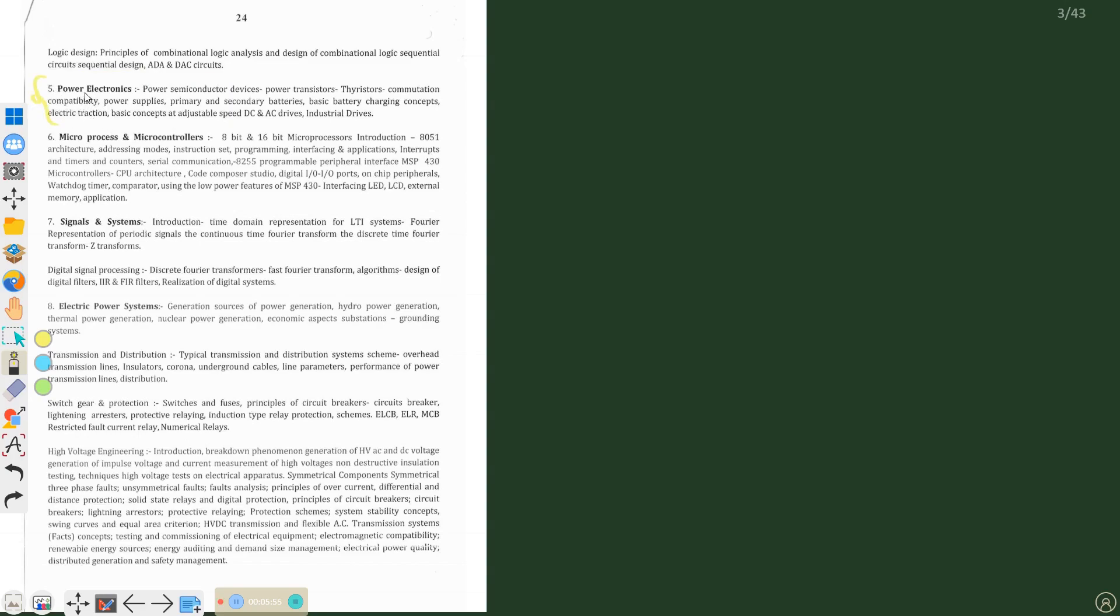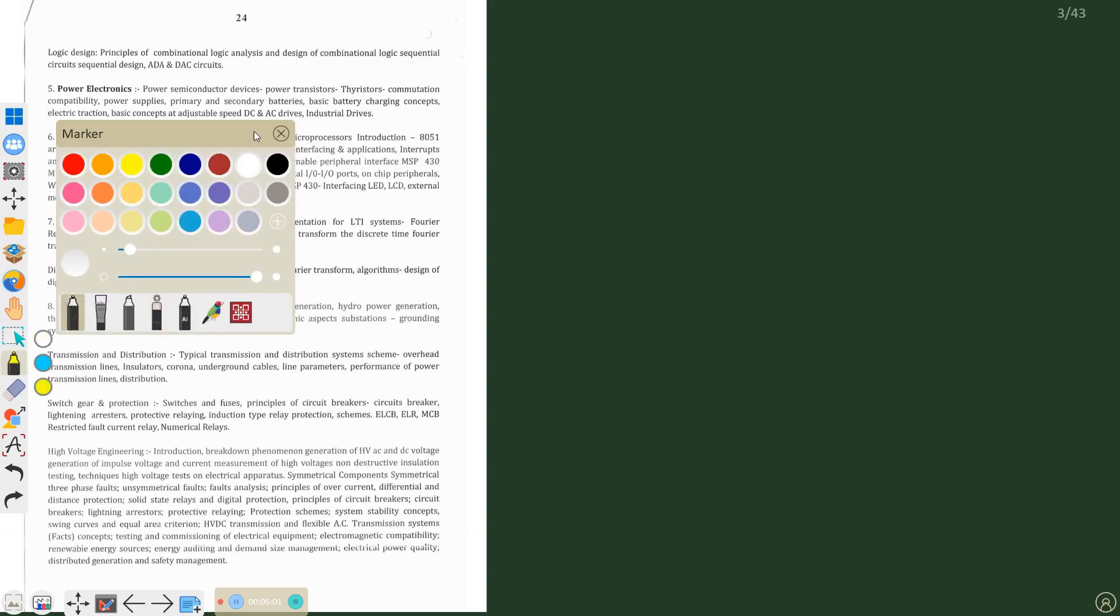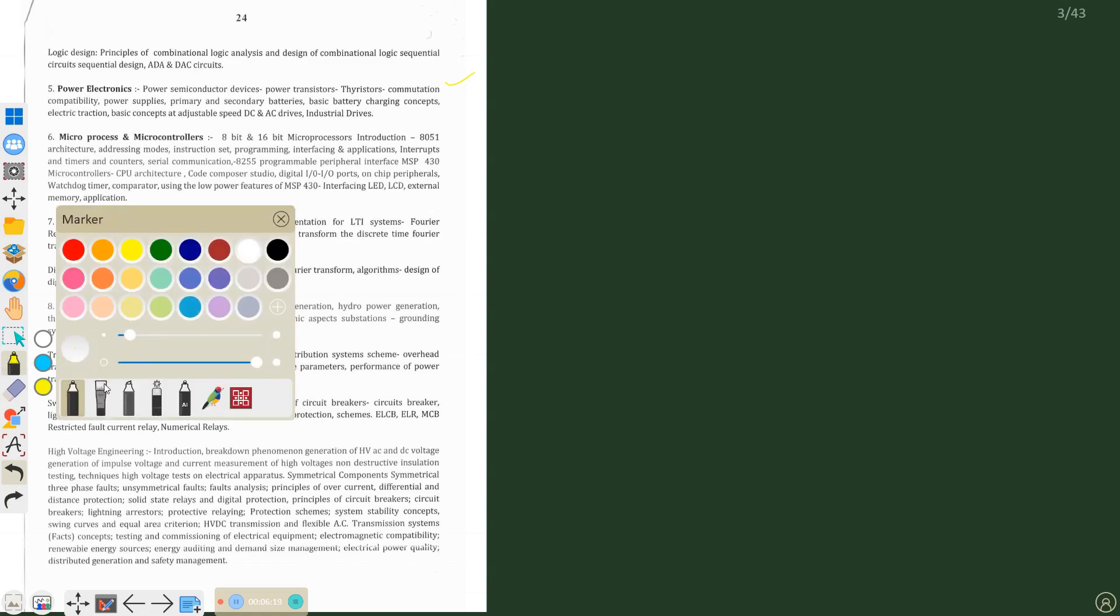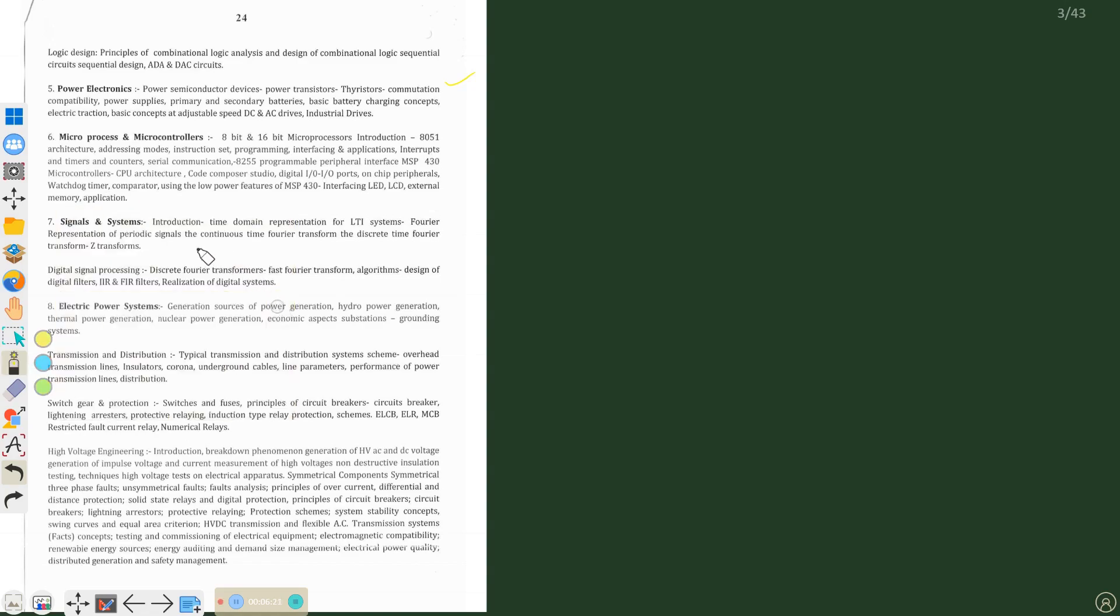Now we have power electronics. In power electronics, we will be covering power semiconductor devices - SCR, MOSFET, IGBT, thyristor. And there is commutation, compatibility, power supply, secondary batteries, basic battery charging concept, electric traction. Many, many concepts are there in power electronics also.